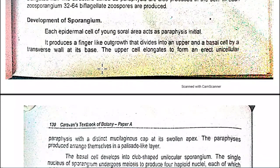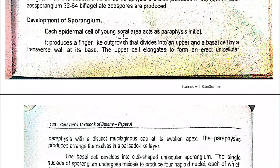Regarding the development of the sporangium: each epidermal cell of the young soral area acts as a spore mother cell. Every epidermal cell in the soral area behaves like a parent cell, producing a finger-like outgrowth. This outgrowth divides into an upper cell and a basal cell by a transverse wall, giving two cells.